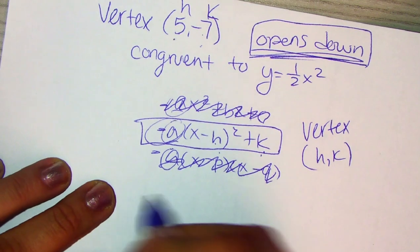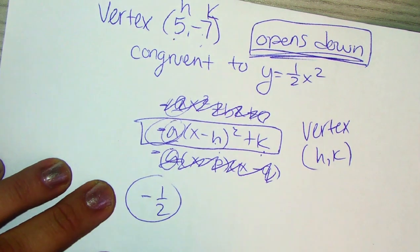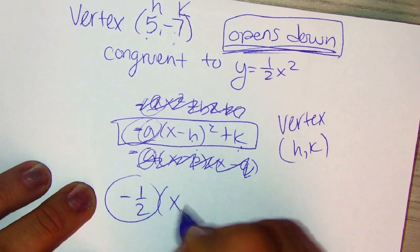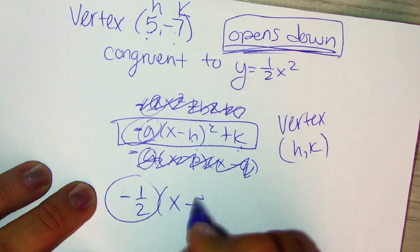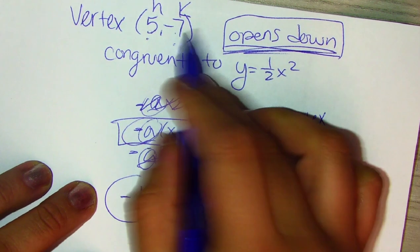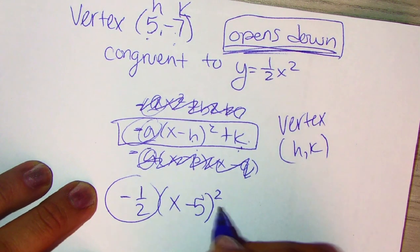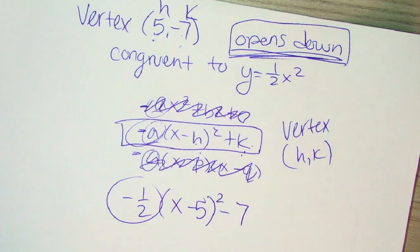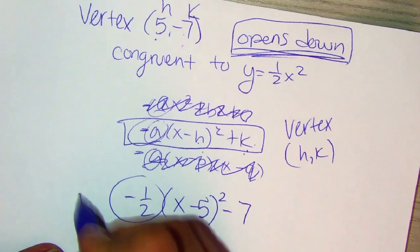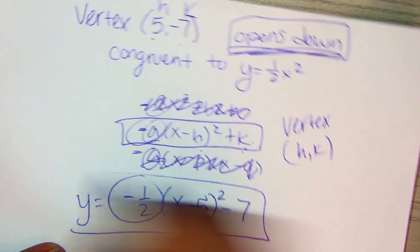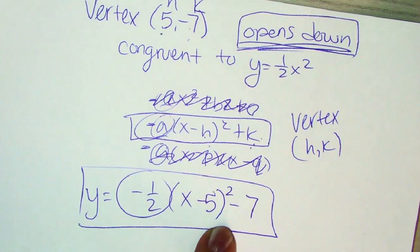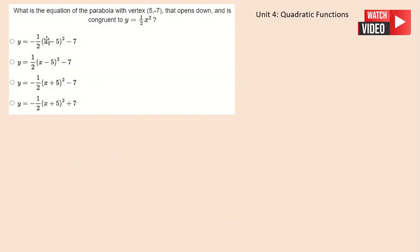So we already know A is negative one half. We know that. Now we're going to have X minus your H value. So that's five. And then your K value minus seven. So this is going to be Y equals negative one half X minus five squared minus seven. So definitely the top one is the answer.